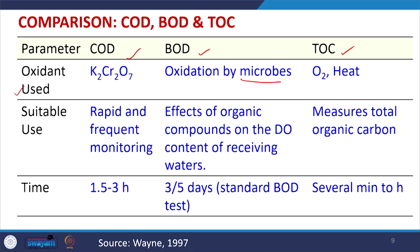In terms of oxidants used: COD uses a highly oxidizing chemical — potassium dichromate; BOD oxidation is carried out by microorganisms; and the TOC analyzer uses oxygen or heat for oxidation. COD analysis is rapid, taking around 1.5 to 3 hours. The standard BOD test requires 3 or 5 days and measures the effect of organic compounds on the dissolved oxygen content of the receiving water. TOC measurement takes only several minutes up to a maximum of 1 hour using instruments.